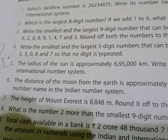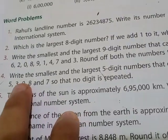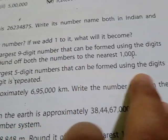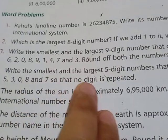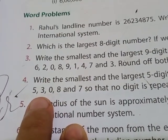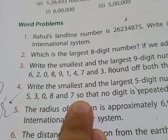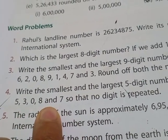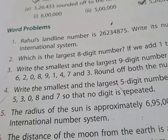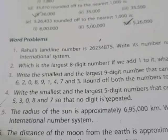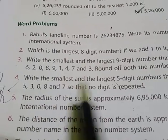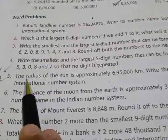Question number four: write the smallest and largest five digit number that can be formed using the digits five, three, zero, eight, and seven — no digit can be repeated. It is simple. First write the smallest number using these digits, then write the largest number. I hope you all can do this question on your own.